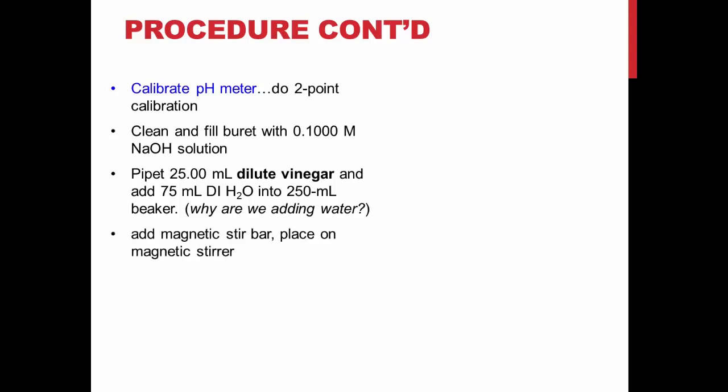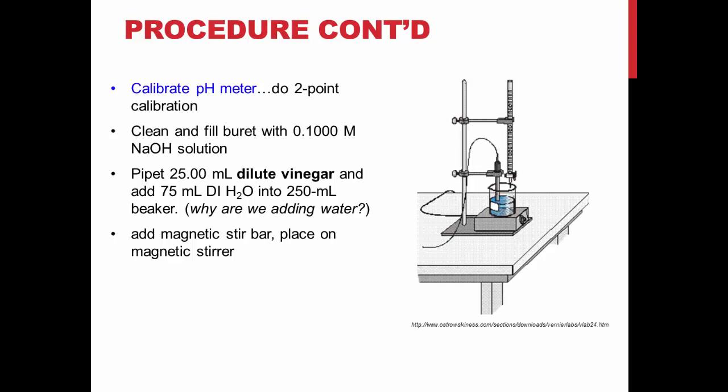Add a magnetic stir bar and place the solution on top of a magnetic stirrer. Be careful to keep the pH electrode away from the magnetic stir bar when you turn it on.